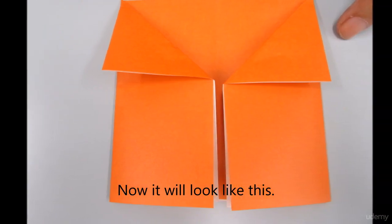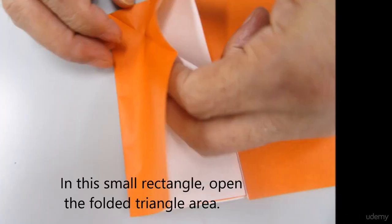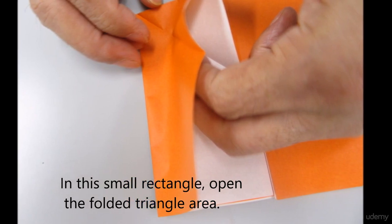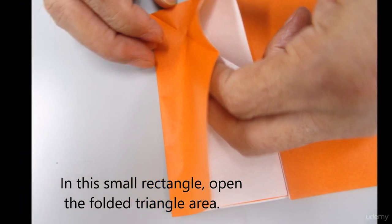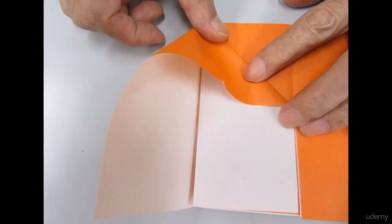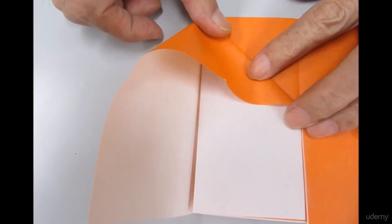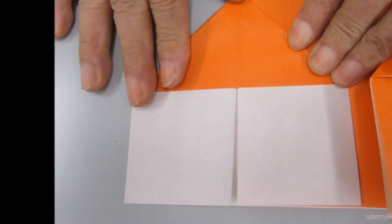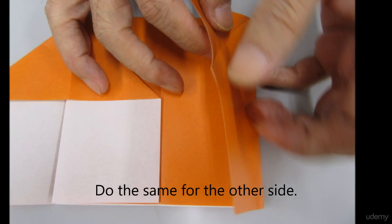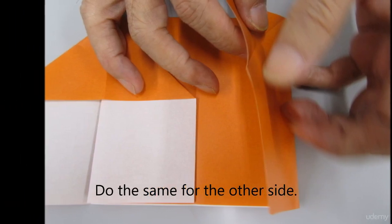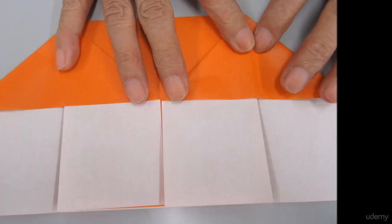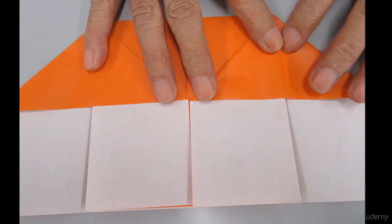Now, this is what you should have. Next, in this small rectangle, open the folded triangle area, which will be like this. And do the other side as well, like this.